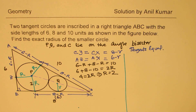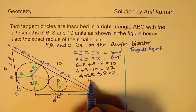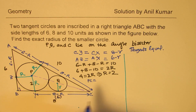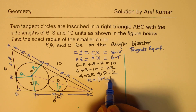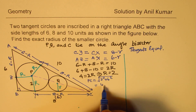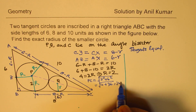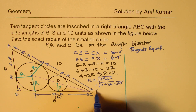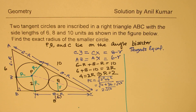Since we know R equals 2 and the tangent length is 6, we can find PC. P to C equals the square root of 2 squared plus 6 squared, which is the square root of 4 plus 36, or square root of 40, which equals 2 square root 10. So PC equals 2 square root 10.